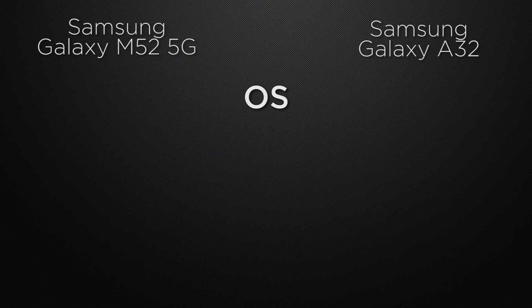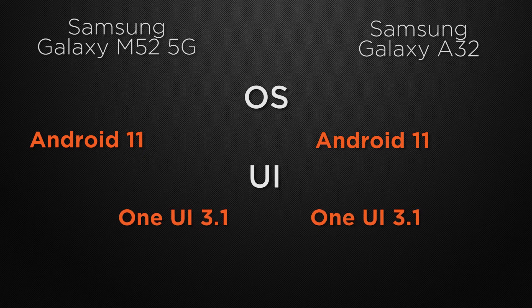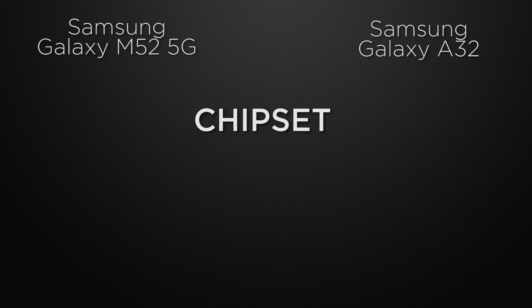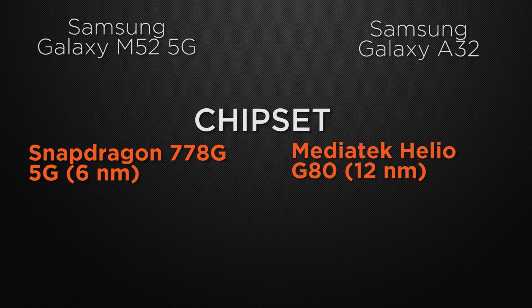Moving to the performance of the devices, let's start with the operating system. Both the M52 and A32 have Android 11 support, so it's a tie. Both devices also run One UI, so that's a tie as well. Regarding the processor, the M52 is powered by the Snapdragon 778G based on a 6 nanometer process, whereas the A32 is powered by the MediaTek Helio G80 based on a 12 nanometer process. The winner here is the M52 because it offers much faster processing speed.